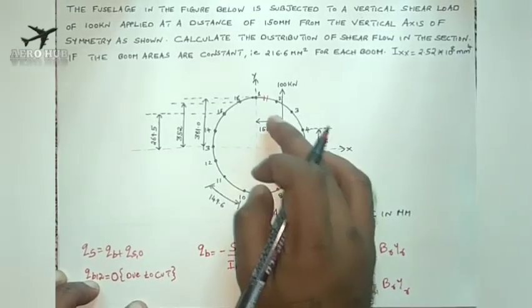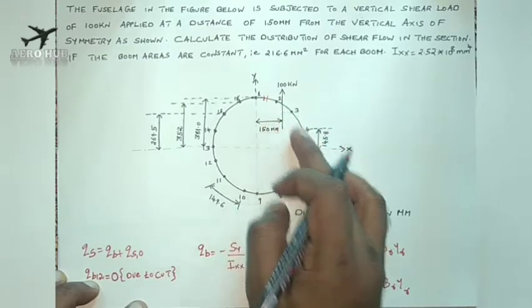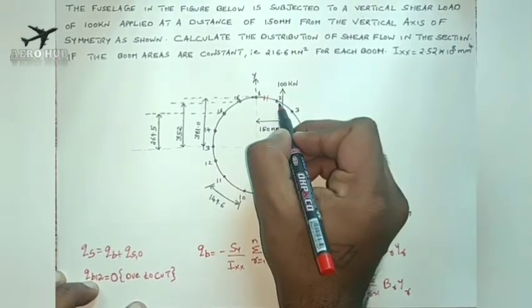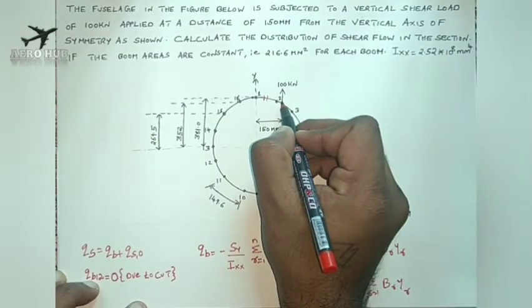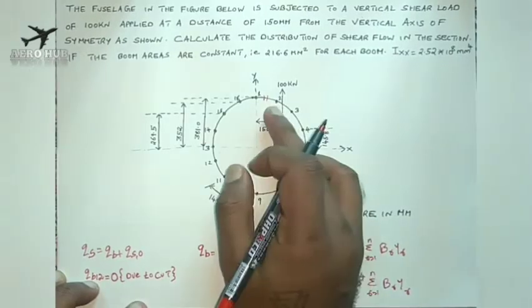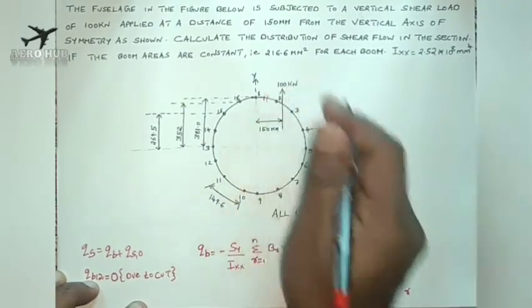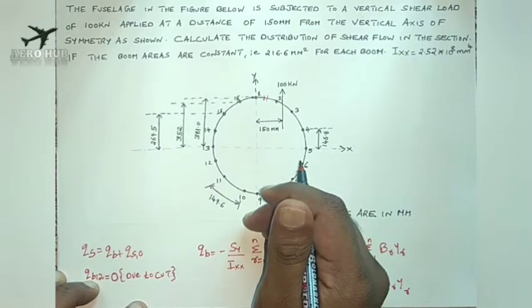Now we have to find out the basic shear flow value for the entire section. I will start from boom 2 and find out the shear flow for the entire section.